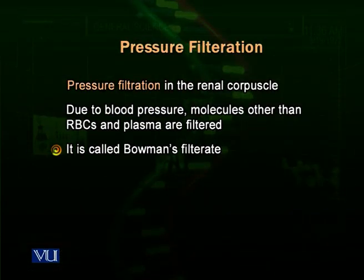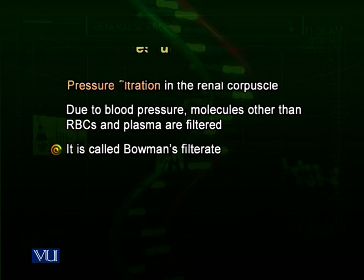Because the glomerular capillaries are in close contact with the renal capsule — the Bowman's capsule — exchange of many materials occurs between the blood capillaries of the glomerulus and the renal capsule. This makes the initial filtrate, also called Bowman's filtrate, because the capsule is named after its discoverer and is called the Bowman's capsule.